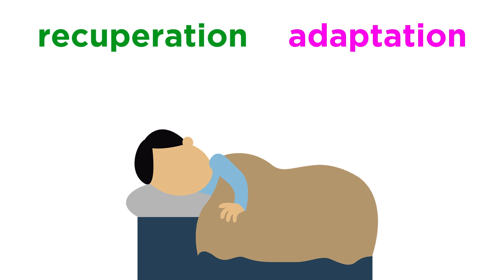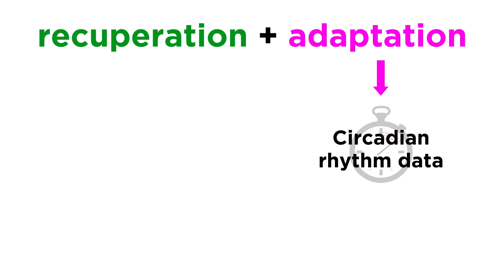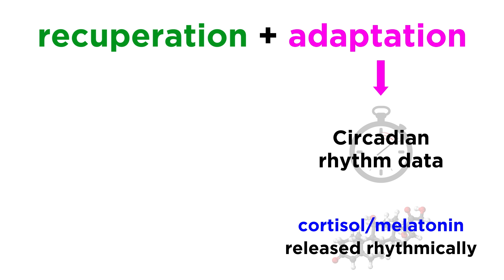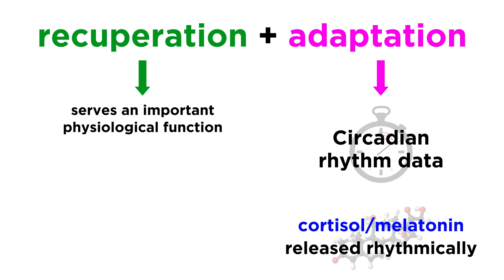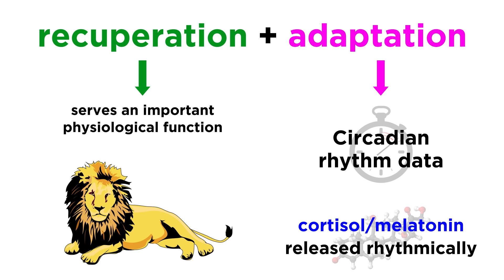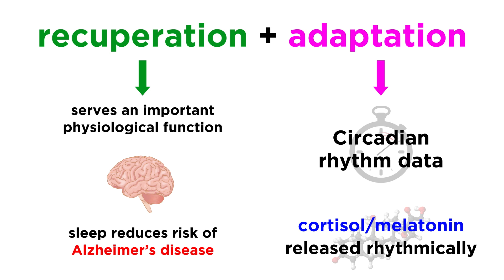In looking at these recuperation and adaptation theories, reality is more likely to lie in their combination. Data regarding circadian rhythms is quite convincing, and even certain hormones display these rhythms, such as cortisol and melatonin. It also seems clear that sleep serves an important physiological function in all mammalian species, even large predators that are not at much risk at night. Studies have shown that sleep drains the brain's ventricles of compounds that lead to Alzheimer's disease, so these kinds of factors must be taken into account.